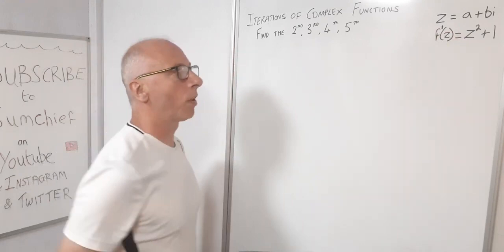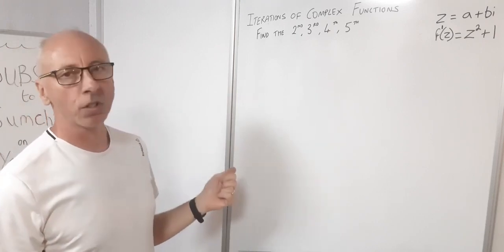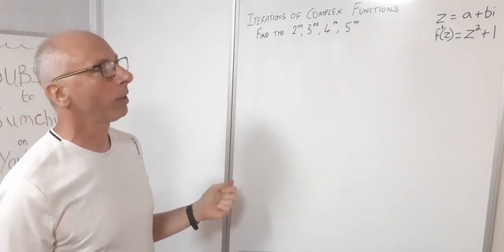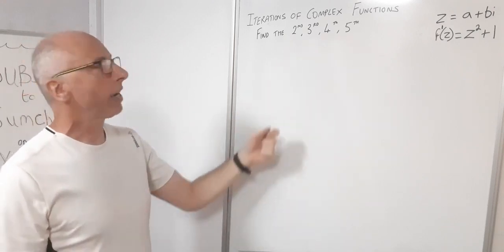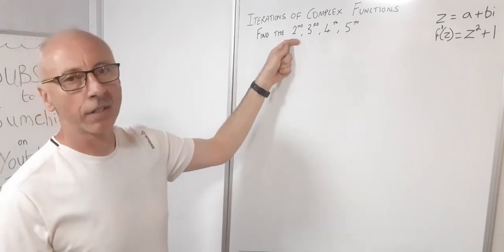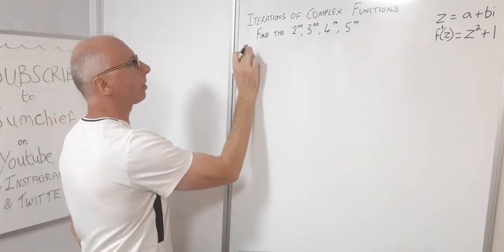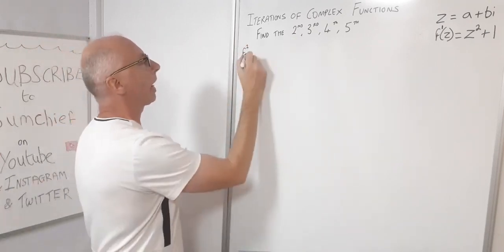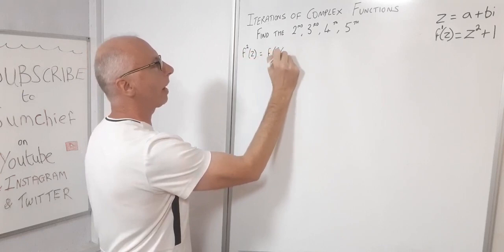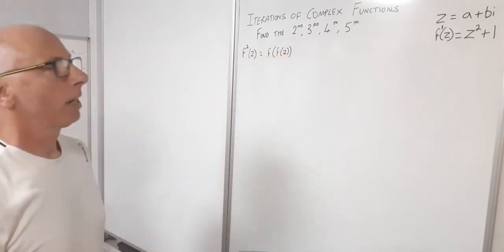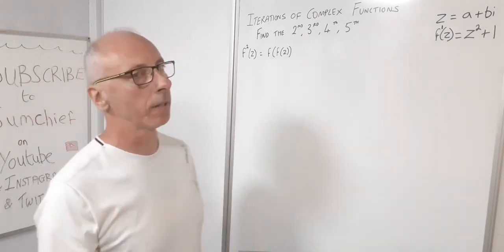You can put a superscript 1 there to show it's the first iteration. If you check the link below, you'll see certain rules and shortcuts for finding the third, fourth, and fifth iterations. For now, I'm going to jump straight in and find the second iteration. The second iteration, f₂(z), equals f(f(z)).